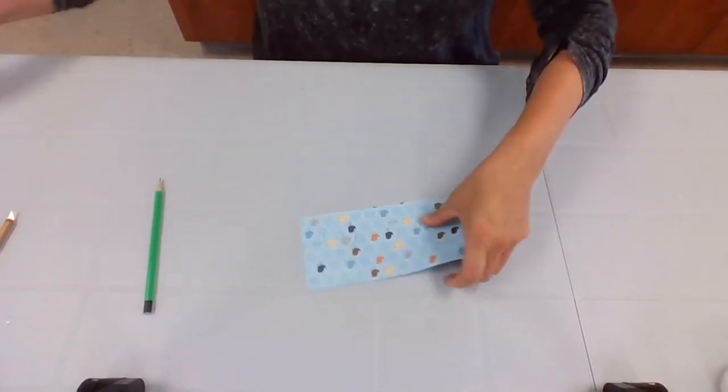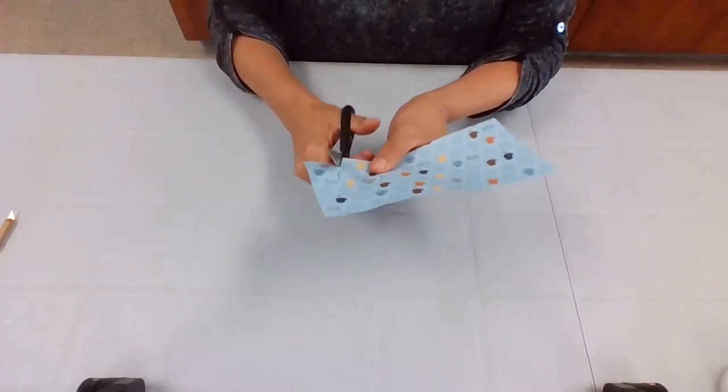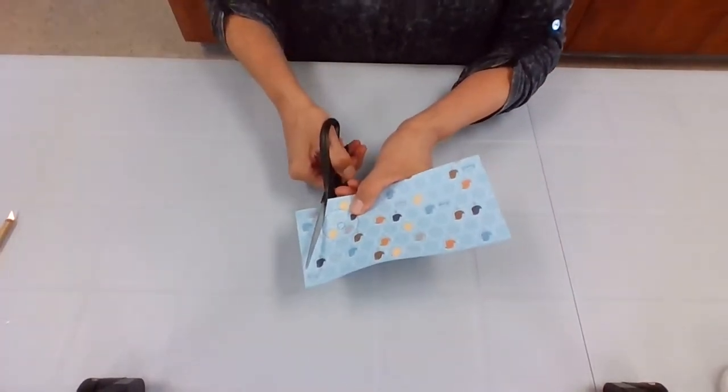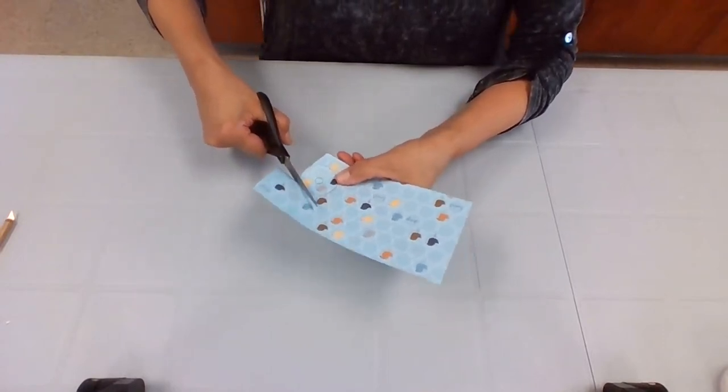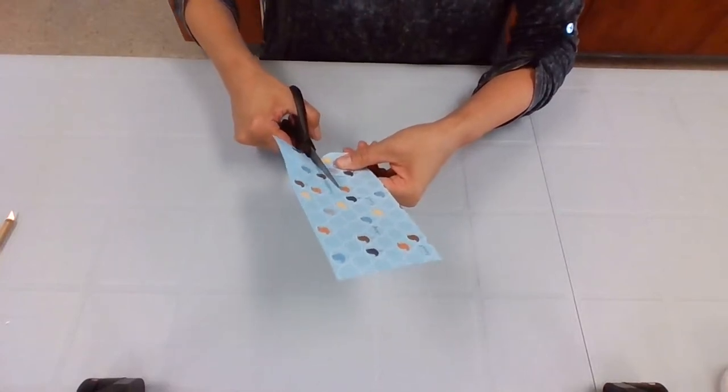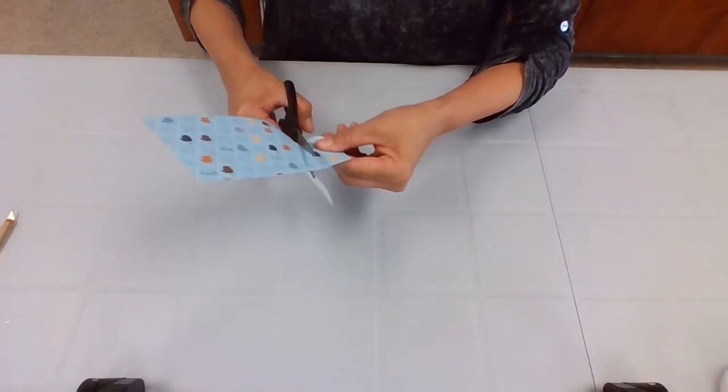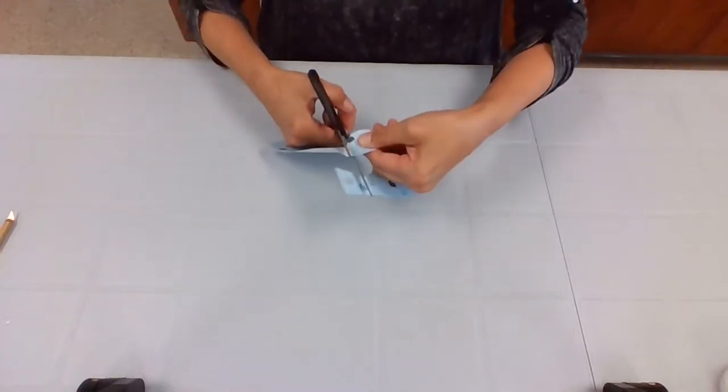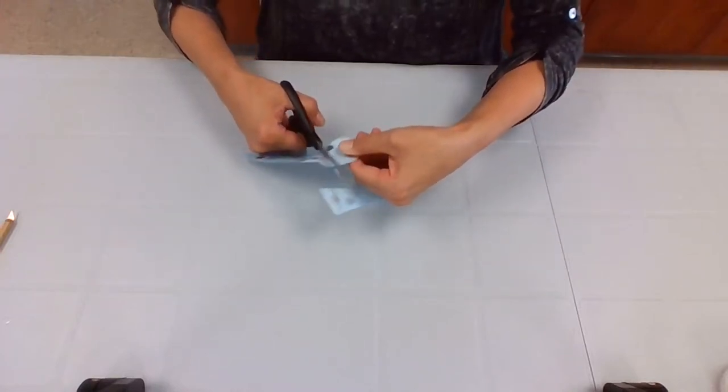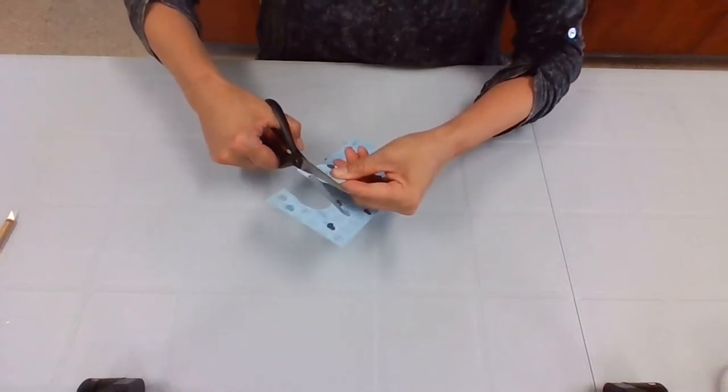Once you do that, let's get your scissors. And we're going to cut around the inside line where we traced, so it's going to be exactly, or maybe even just slightly smaller than the washer size itself. And it doesn't have to be perfect, because there will be upcoming a way to trim off any of the extra edges.